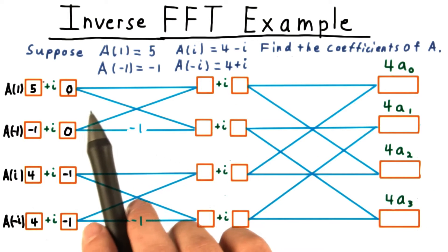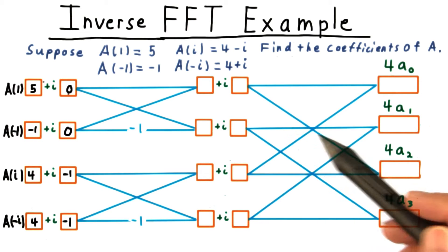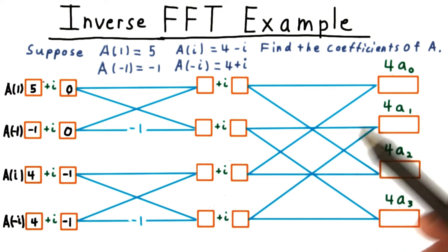Even though as we go forward here, omega is going to be negative i instead of i, because we're doing the inverse transform.